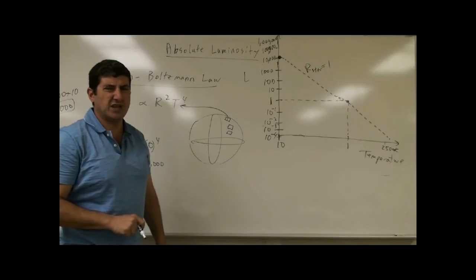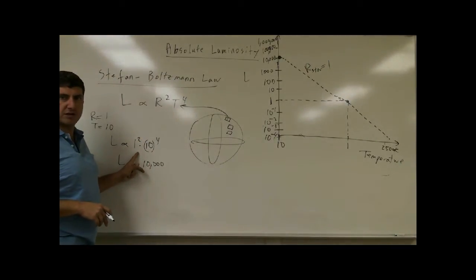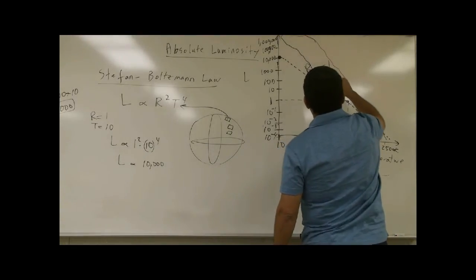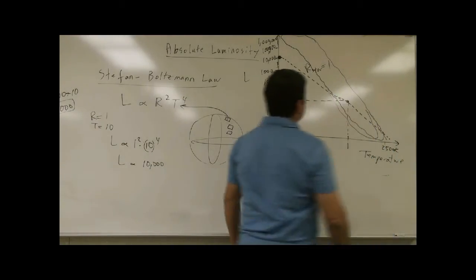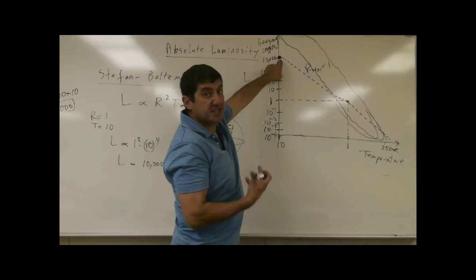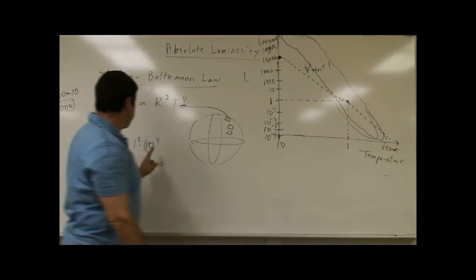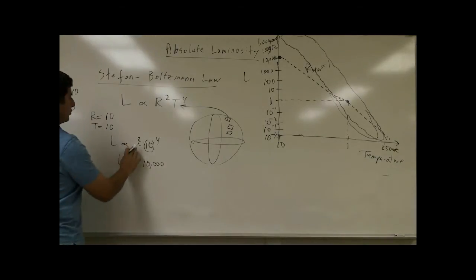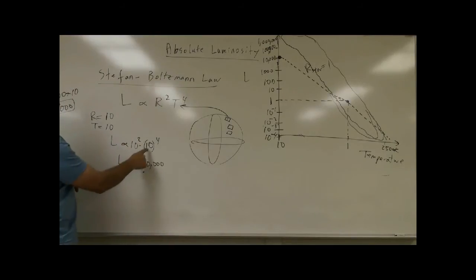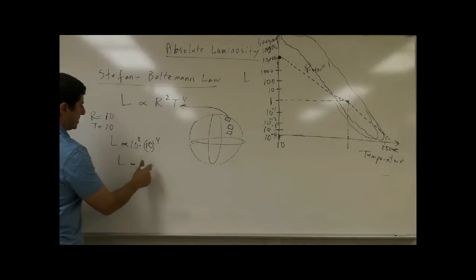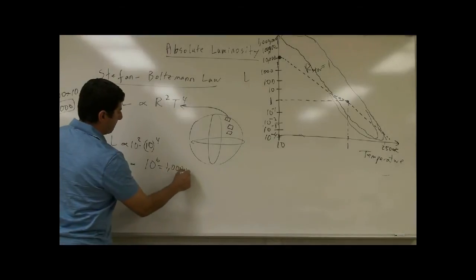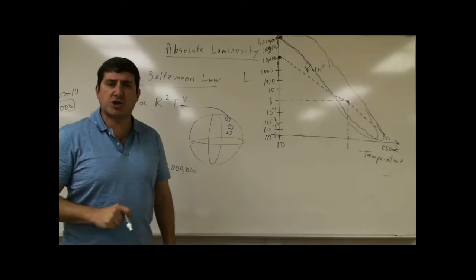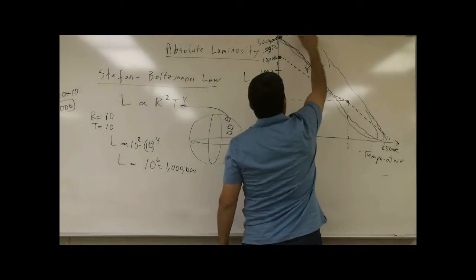Is that star a typical star? Not really, because usually stars that are 10 times hotter are also bigger — the main sequence runs diagonally. What if a star is 10 times hotter and 10 times the size? Then you take 10 squared times 10 to the 4th. The luminosity becomes 10 to the 6th, which is a million. That brings us to the top left corner of the HR diagram — roughly the brightest star you could have.